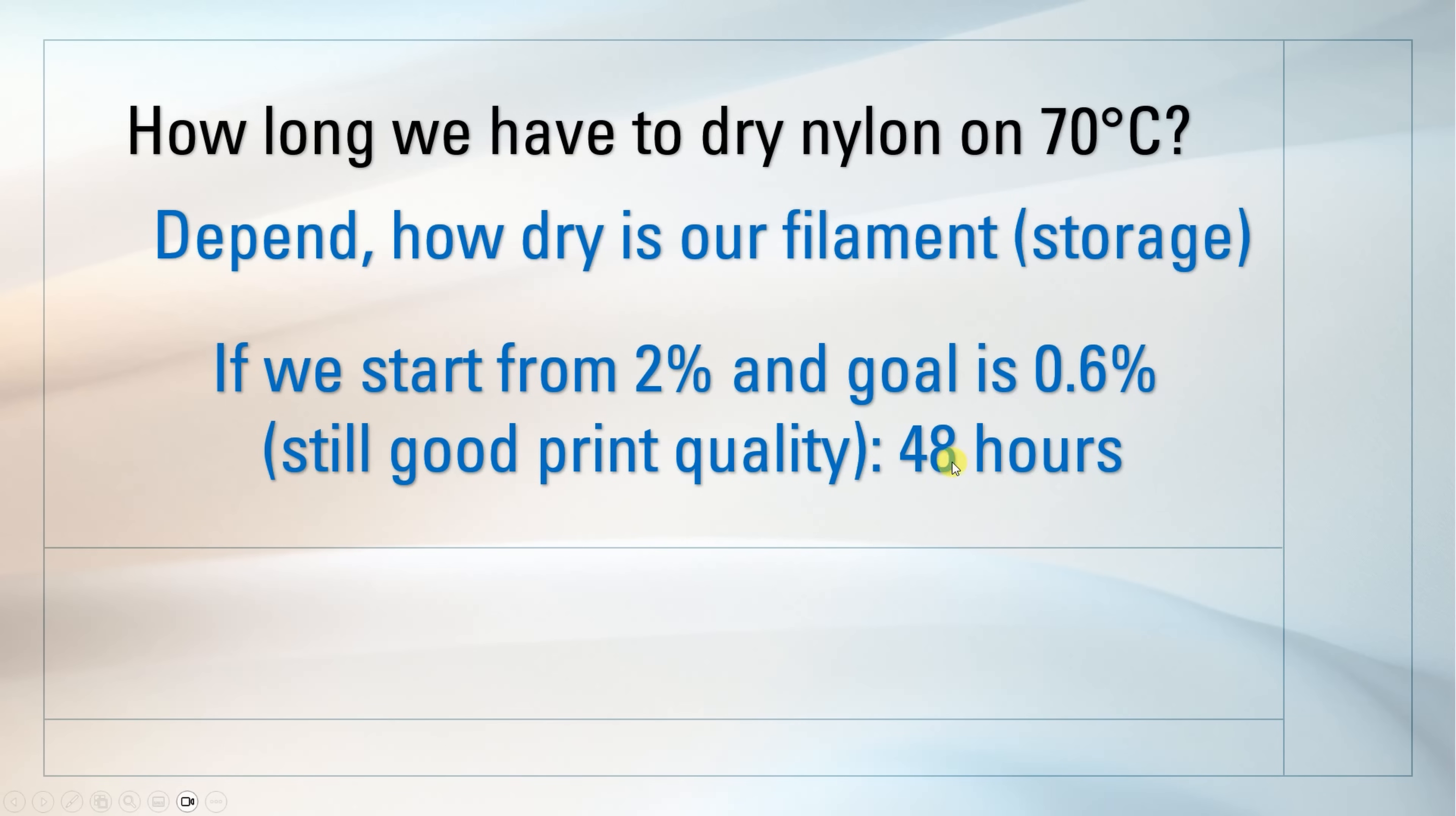Of course, if we go closer to 1%, then we can dry in 12, 24 hours. But if we would have a dryer which can dry on 95 degrees Celsius, in that case, this time would reduce to 5 hours only.